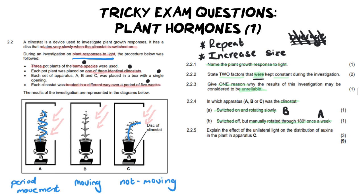The last question is another reason I chose this as a tricky question — it requires you to be very careful to only talk about what the question is asking. Sometimes people waffle and give too many details and don't actually answer the question. Look very carefully: it says explain the effect of unilateral light — light coming from one direction only — on the distribution of auxins in plant C. It's only three marks, so don't talk about it collecting on the dark side, cells elongating, and bending towards the light.